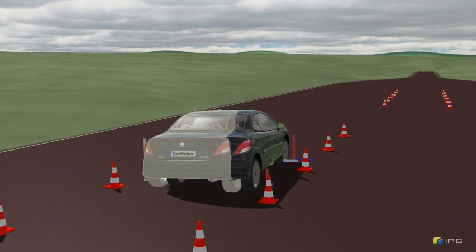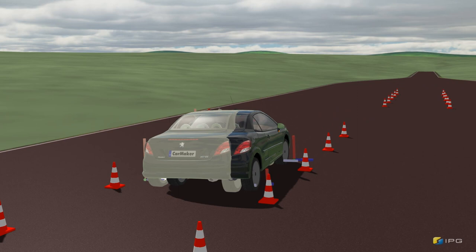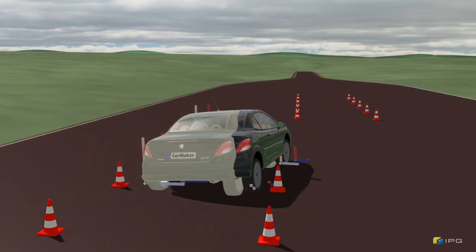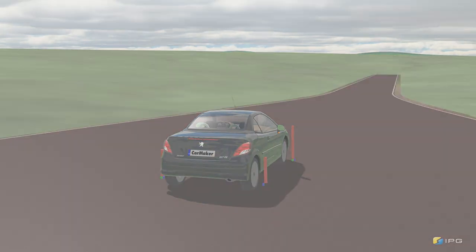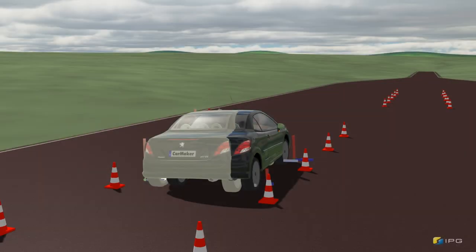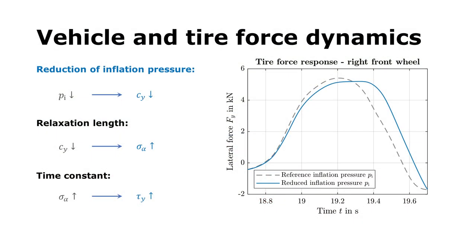During the first lane change to the left, there is only a small difference in the behavior of these two vehicles. However, the difference is increasing and even culminates in instability of the ghost vehicle during the second lane change. Focusing on the first lane change, the figure on the right shows the lateral tire force response of the right front wheel of both vehicles during the steering maneuver to the left. In this case, the depicted force response is not only influenced by steering — a distinct wheel load transfer has to be considered too. A certain time delay of the lateral tire force in the case of reduced inflation pressure can be observed.